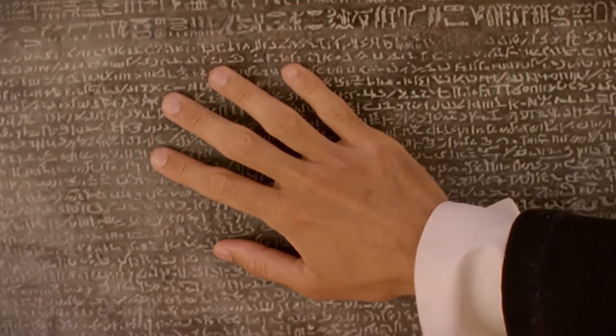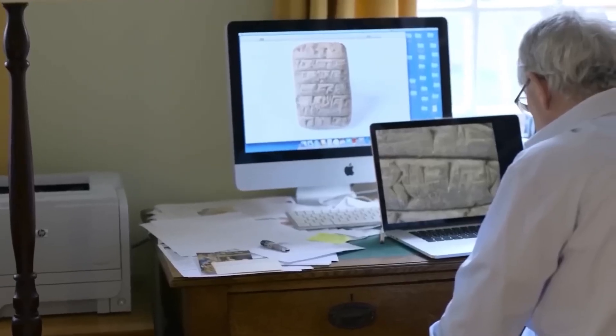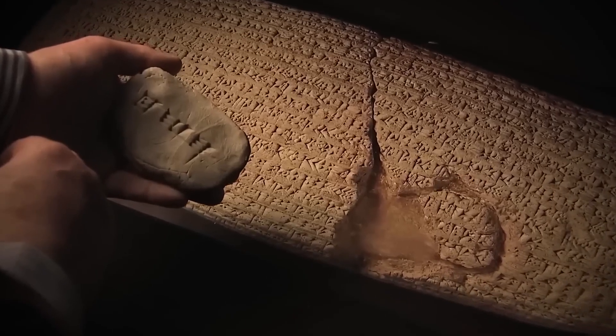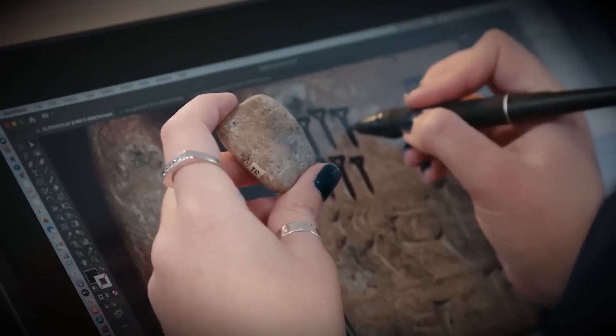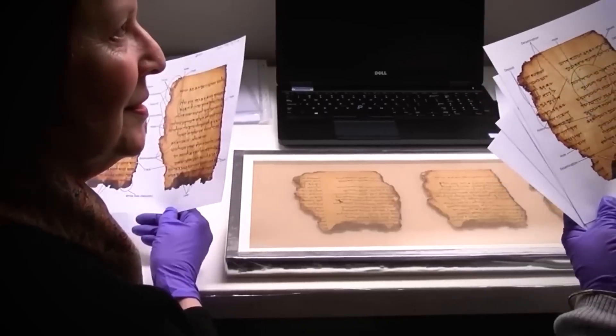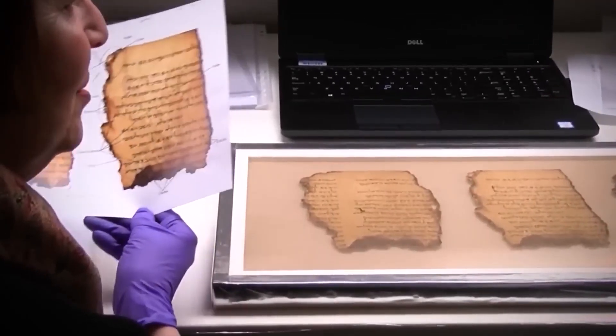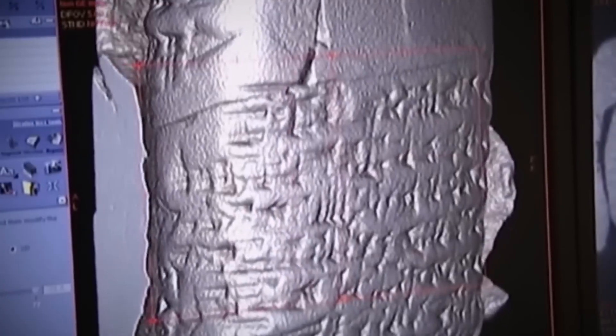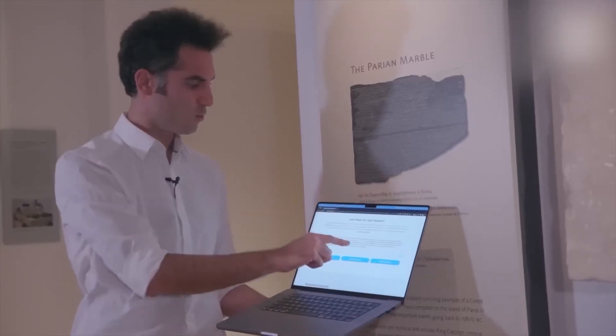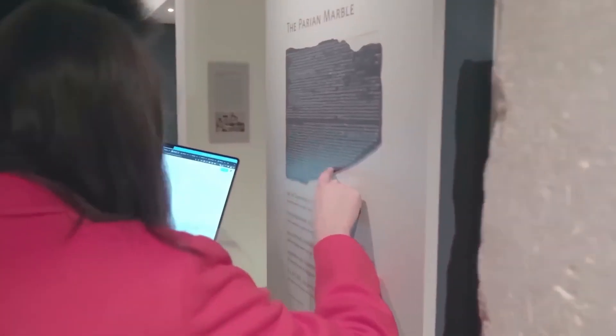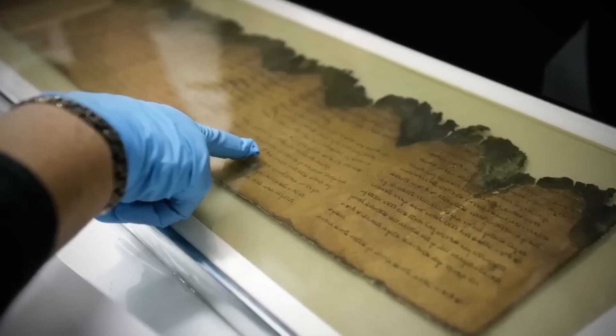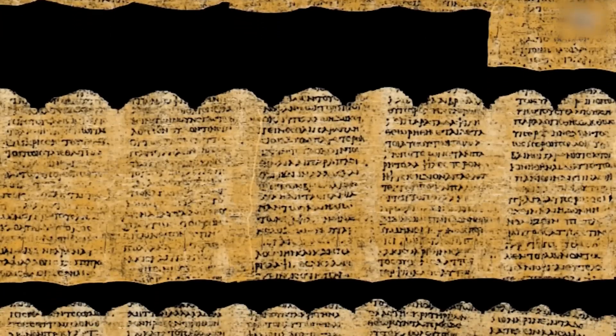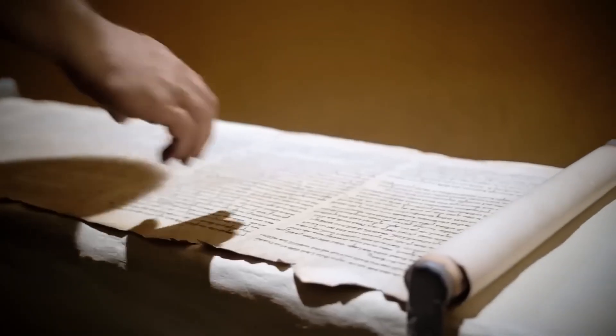Even ancient history is being rewritten. This year, AI systems translated ancient texts that no living person could interpret. Sumerian tablets, lost scrolls, Greek inscriptions that had stumped scholars for generations. AI is bringing dead languages back to life. One MIT project reconstructed entire passages from fragmented texts, effectively letting us hear voices from civilizations that vanished thousands of years ago.